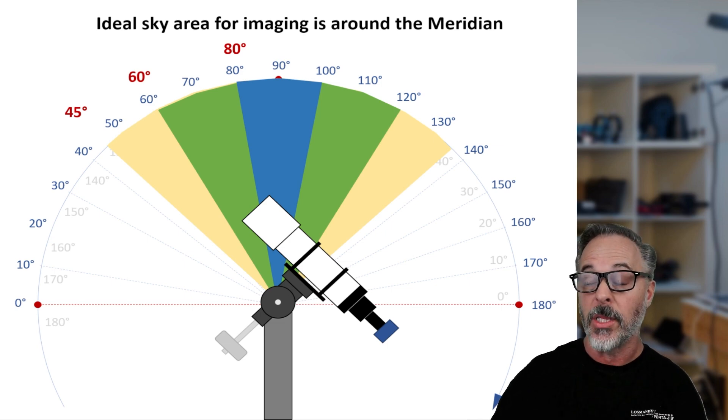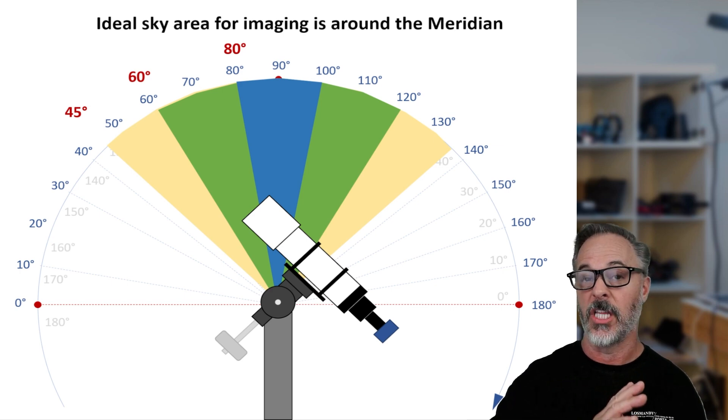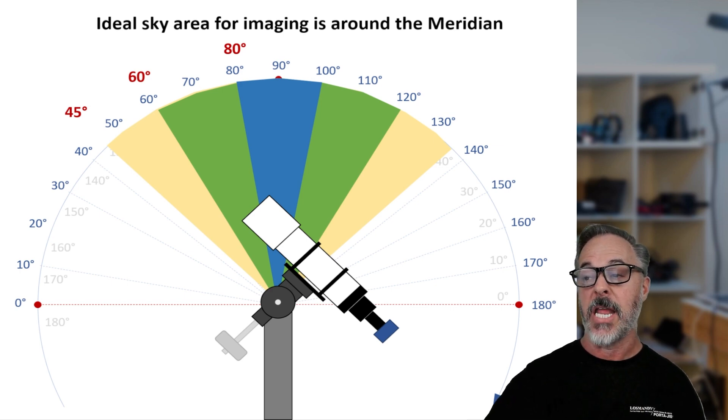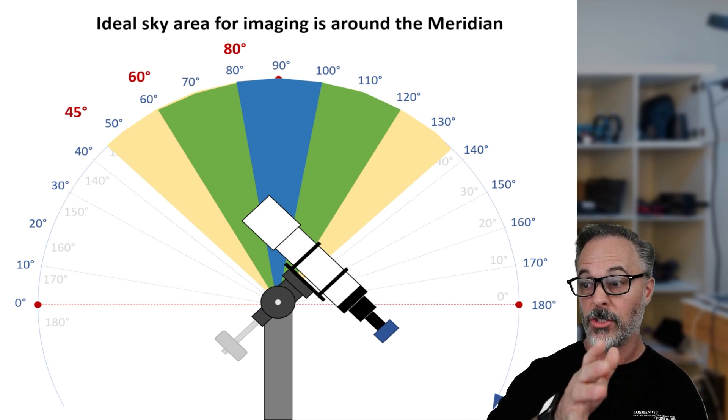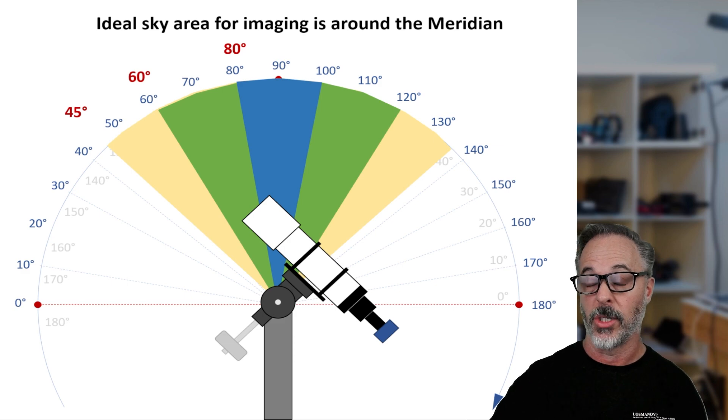So sometimes your targets are going to be lower in the sky. There's nothing you can do about that short of actually physically moving somewhere else, but you can maximize the atmosphere disturbances or sorry, minimize the atmospheric disturbance by shooting closer to the meridian because otherwise you're still running into other issues around the transparency.